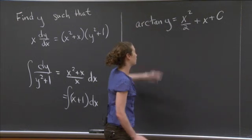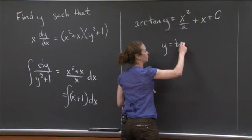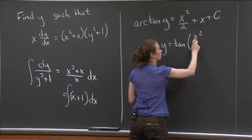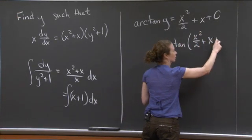When I take tangent of arctangent of y, I just get y. And over here, I get tangent of x squared over 2 plus x plus c.